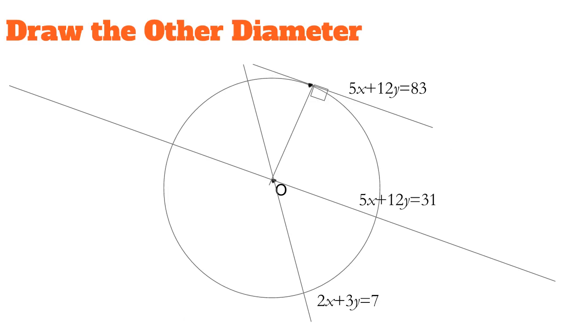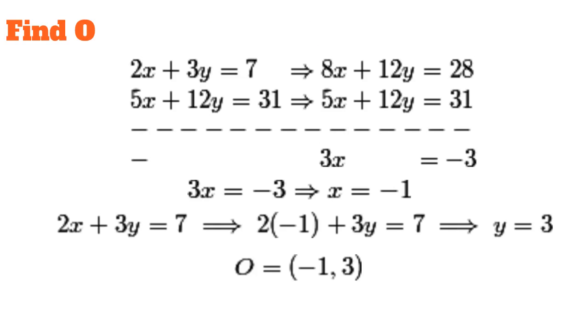First, let's find O using the system of equations. I've multiplied 2x plus 3y equals 7 by 4, so that both equations have a 12y term. Then I subtracted the two equations from each other to get 3x equals negative 3. That gives us x equals negative 1. Substitute that back into the original equation and get 2 times negative 1 plus 3y equals 7. Solve for y and you should get y equals 3.